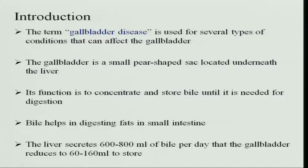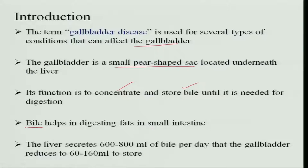The term gallbladder disease is used for several types of conditions which affect the gallbladder. It is a very small pear-shaped sac located just under the liver, and its function is to concentrate and store bile, which is needed for further digestion. Bile is important for digesting fat in the small intestine, specifically the duodenal part. The liver secretes about 800 ml of bile per day, and the gallbladder concentrates it into 60 to 160 ml to store, with a maximum storage of 60 ml.